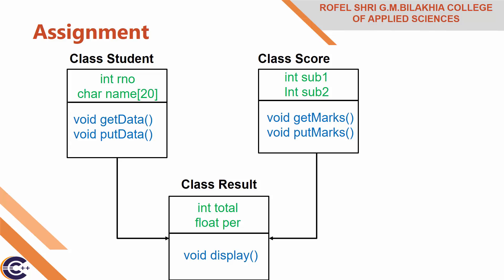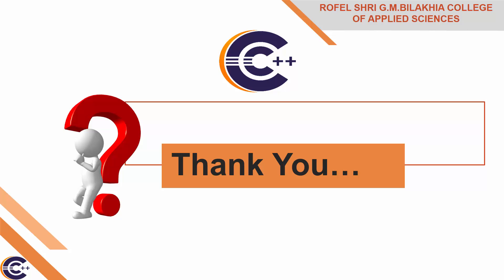Now you have one assignment. There is a class Student with protected data members roll number and name, with member functions getData and putData. Class Score is another base class with protected data members subject1 and subject2, and member functions getMarks and putMarks — getMarks accepts the marks and putMarks displays them. From these two base classes, derive class Result, with data members total and percentage. Total will add the subject marks, percentage will be evaluated from total, and the display function will show the student result. Perform this assignment in Turbo C. If you have any query regarding multiple inheritance, you can message me. Thank you.